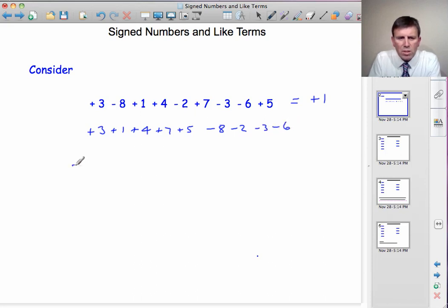And now we can look to see how many positives we have. 3, plus 1, is 4, plus 4, is 8, plus 7, is 15, plus 5, is 20. So I've got plus 20. Now on the right here, they're all negatives. How many negatives have I got? 8 and 2 is 10, 10 and 3 is 13, and 6 is 19. So I've got 19 negatives.